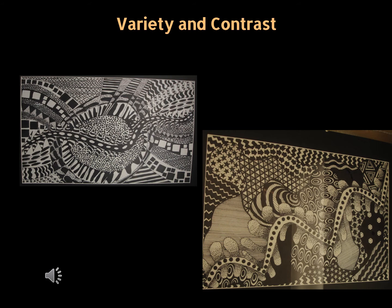Looking at the next two pieces of work, I want to discuss how well the artists organized their work using the principles of variety and contrast. Variety is how the artist uses several different types of elements such as lines, shapes, and form. Contrast is using the opposite of elements of art side by side — it creates visual interest, such as a straight line next to a zigzag line, or an organic shape next to a geometric shape.